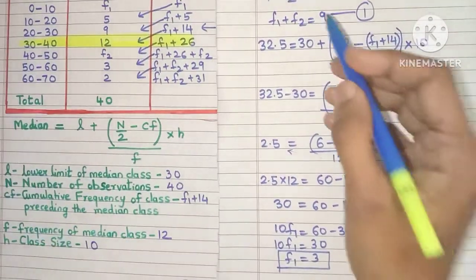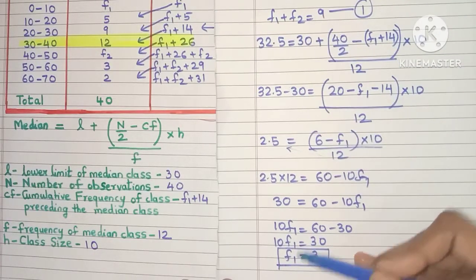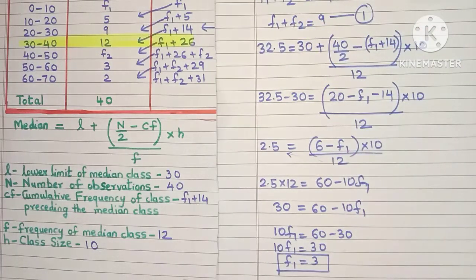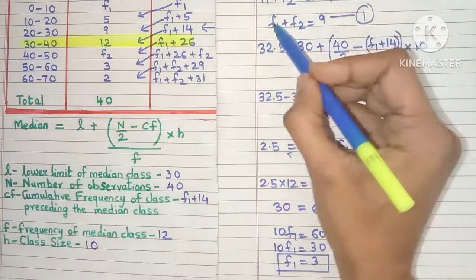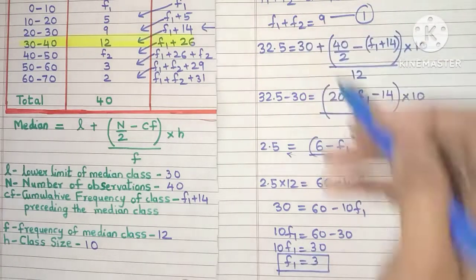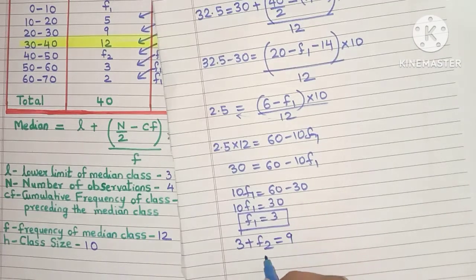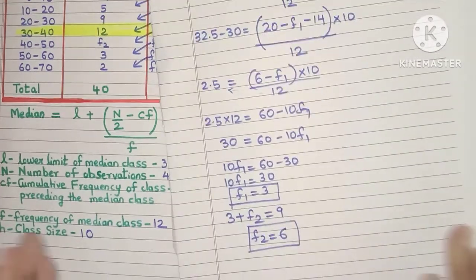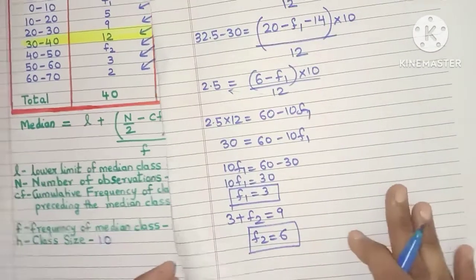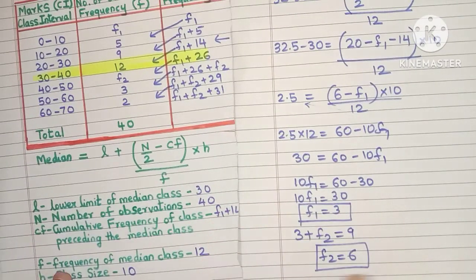To find the other missing frequency, substitute f1 into equation number 1. Equation 1 says f1 plus f2 equals 9. Since f1 is 3, we get 3 plus f2 equals 9, which means f2 equals 6. So we got the values of f1 and f2 very easily using the median formula.